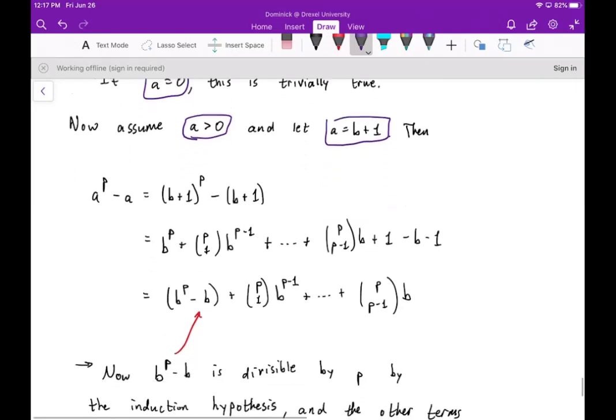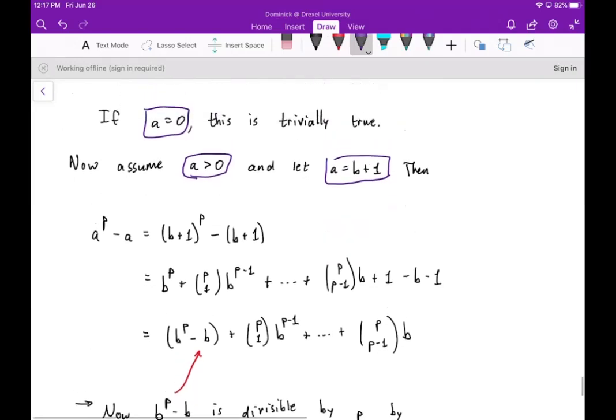So what we're really going to do is we're going to show this is true. We assume it's true for B and show it's true for B plus one. And we want to show that it's true for A, which is B plus one.